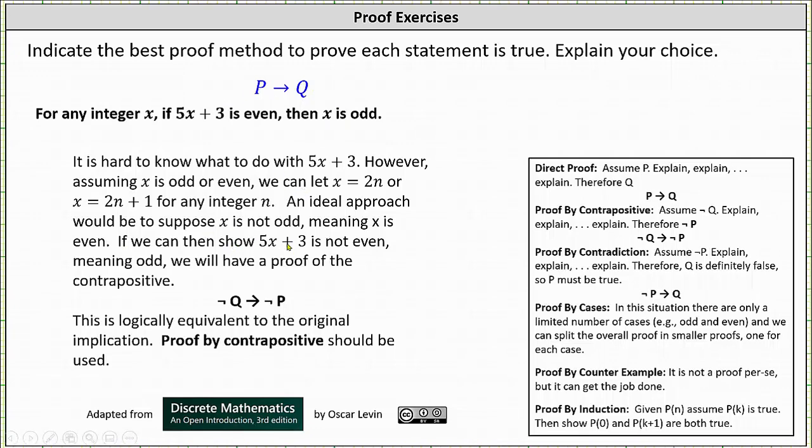If we can show that 5x + 3 is not even, meaning odd or not p is true, we have a proof by contrapositive. The form of a proof by contrapositive proves if p then q is true by proving if not q then not p is true. Not q then not p is logically equivalent to the original implication. Proof by contrapositive should be used.